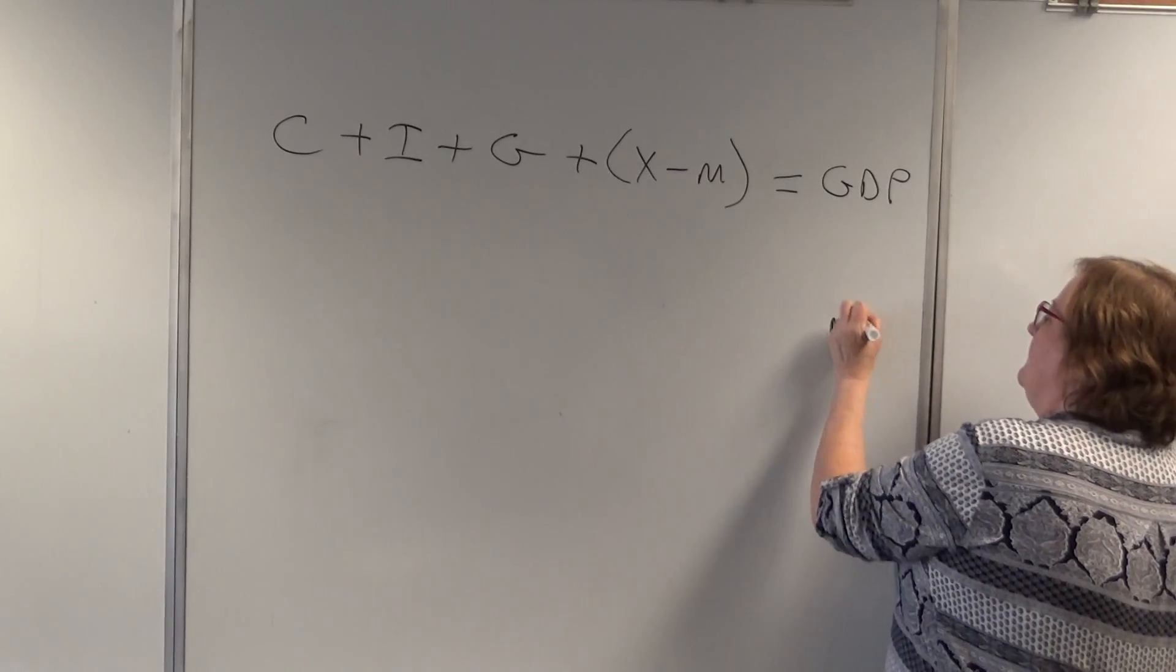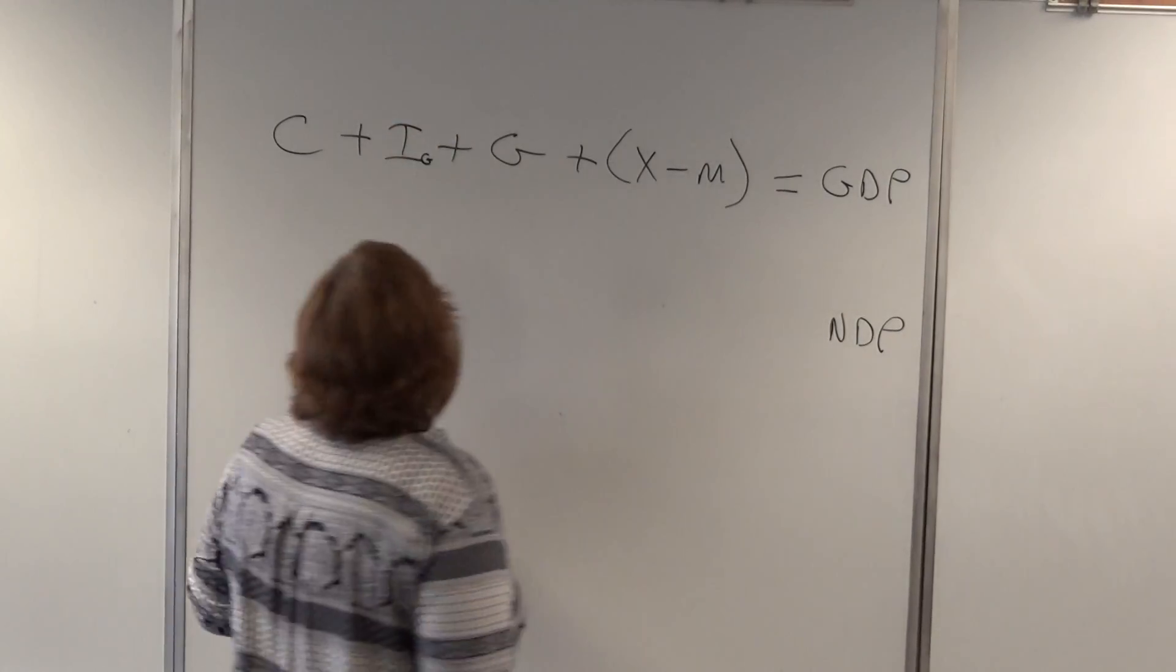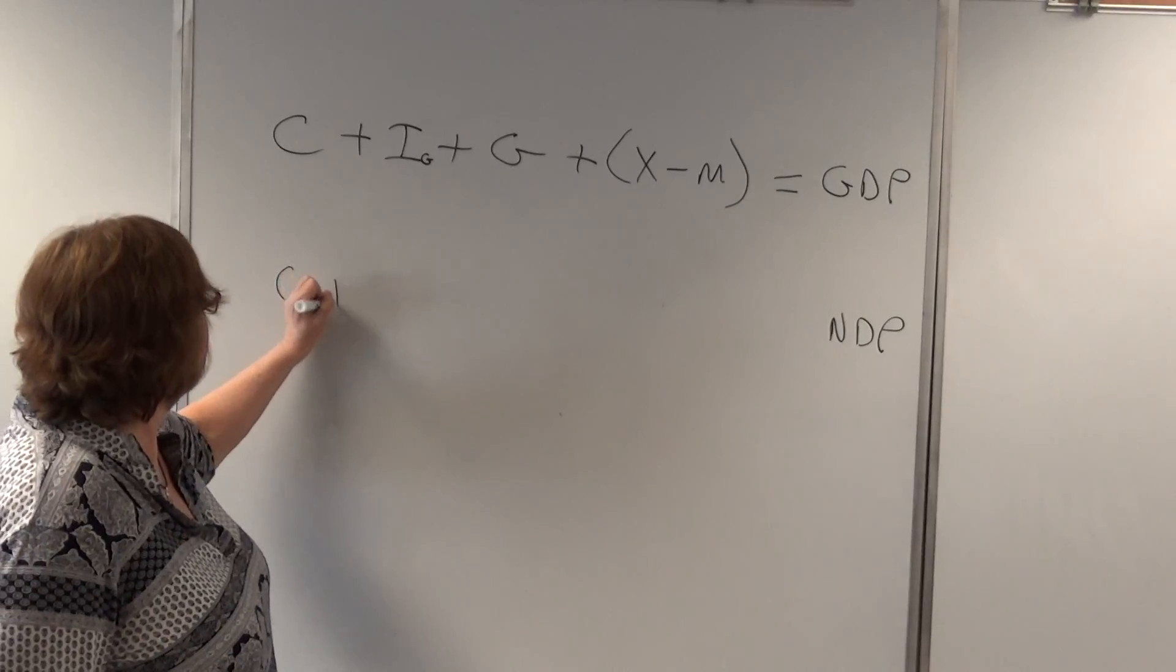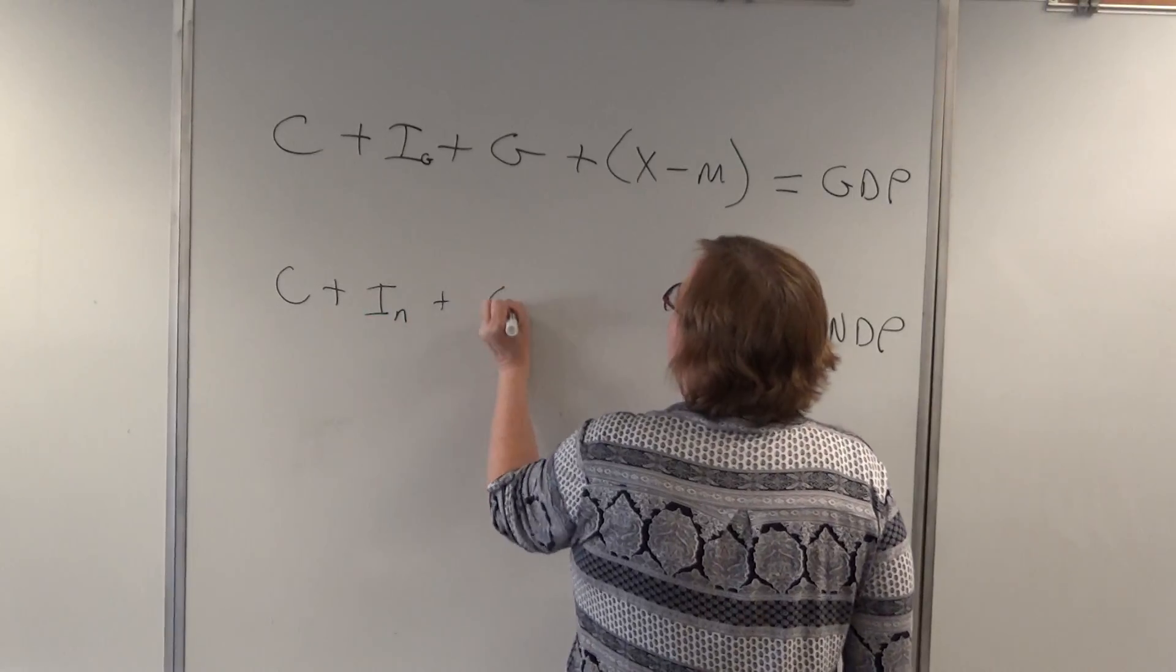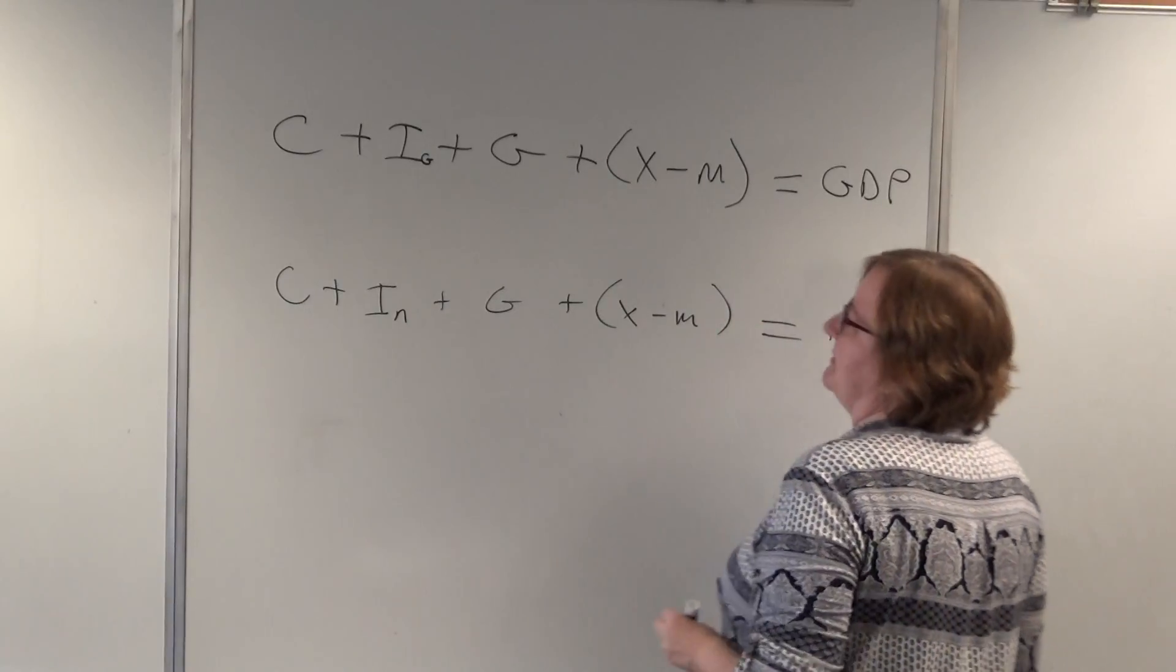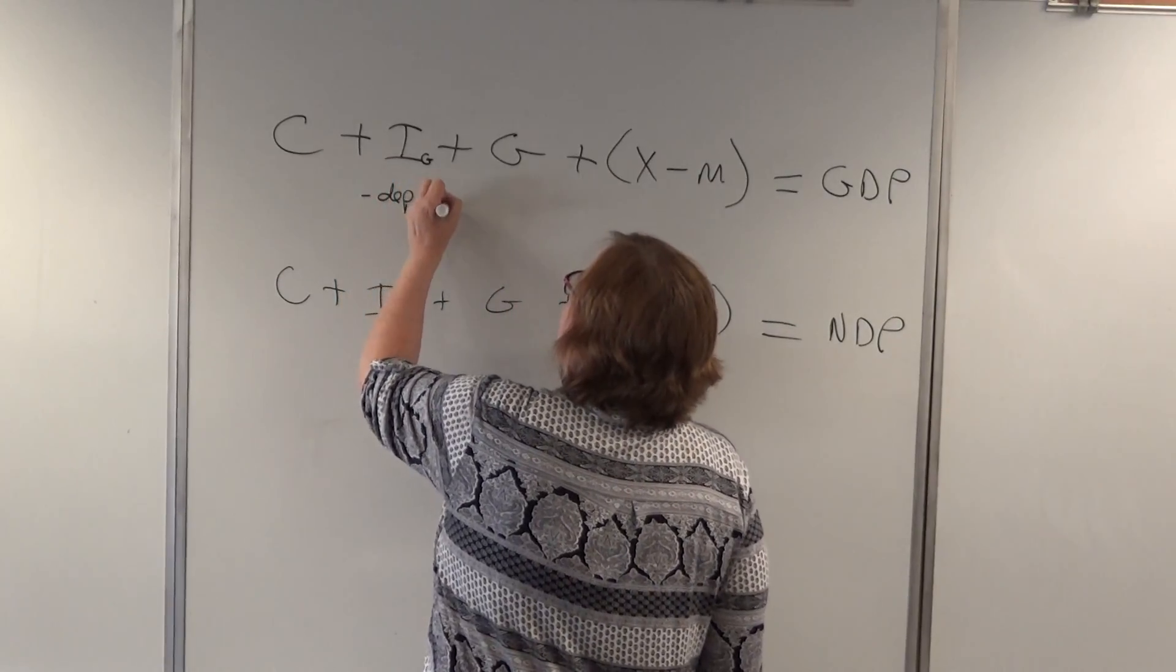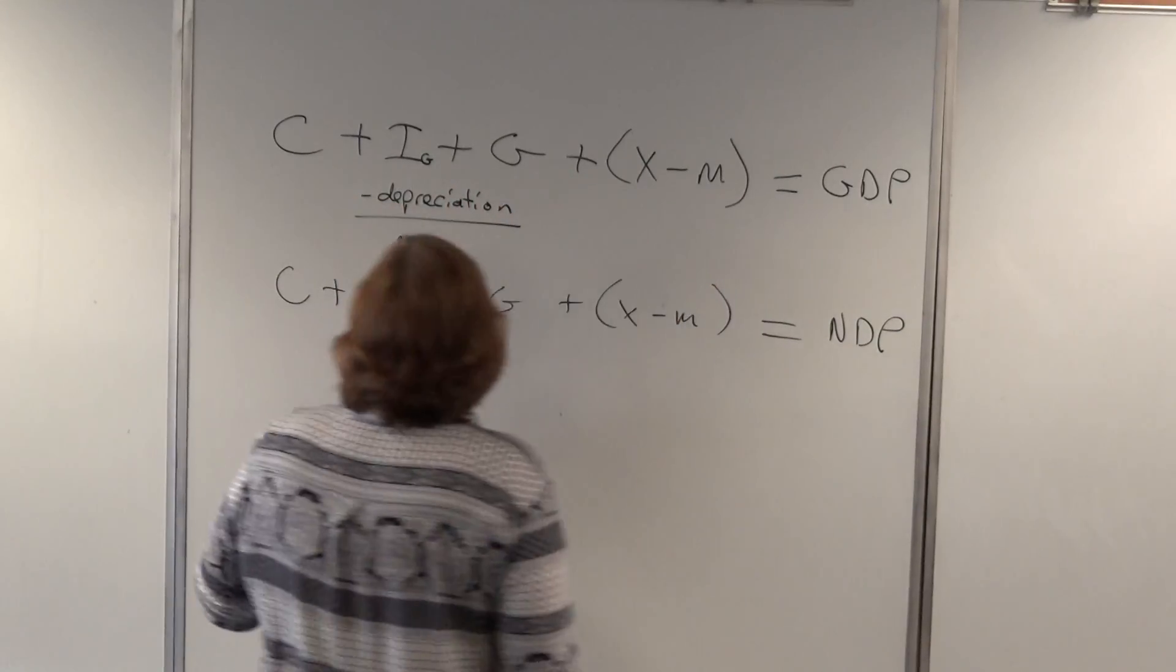C plus I plus G plus X minus M equals GDP. There's also something called NDP. If it's GDP, then there's a little, let's put the G down here this time, a little subscript that says this is gross investment. And, there could be, if you had net investment, then that would be C plus I_n for net plus G plus X minus M. And, the difference is something called depreciation. If you subtract depreciation, you get net investment.